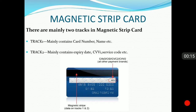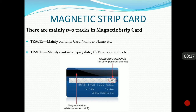This magnetic stripe is basically a black stripe at the back of any debit card. The data resides in this stripe in Track 1 and Track 2. Track 1 contains mainly the card number, the expiry date, and the name of the cardholder, along with many more details.